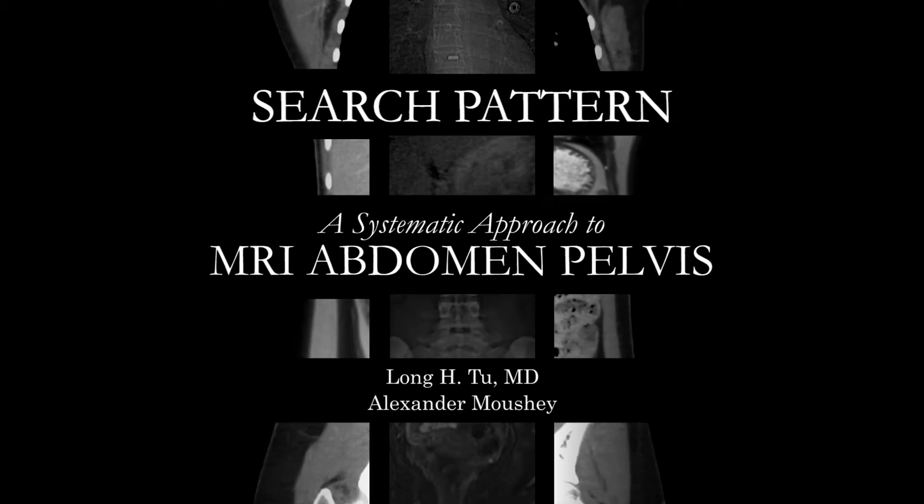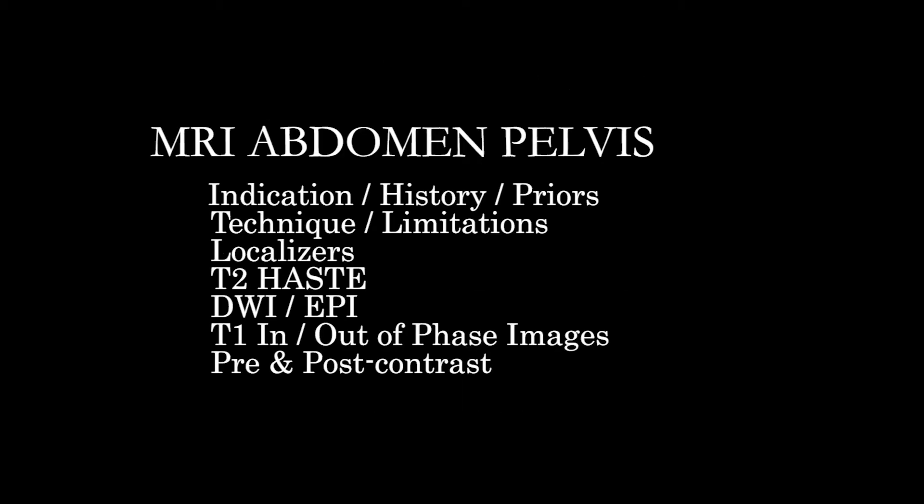Today we're going to talk about a basic approach to the MRI of the abdomen and pelvis. This sort of study is frequently done as a problem-solving exam. You'll frequently have a prior CT, ultrasound, or some other study that will have seen an abnormality, or you'll be following a patient with some known neoplasia or known abnormality, and we're trying to characterize it more fully. Sometimes this study will also be used for staging and to detect any change in the care of a patient. A lot of what we do at our institution is to check for progression and treatment response of oncologic patients.